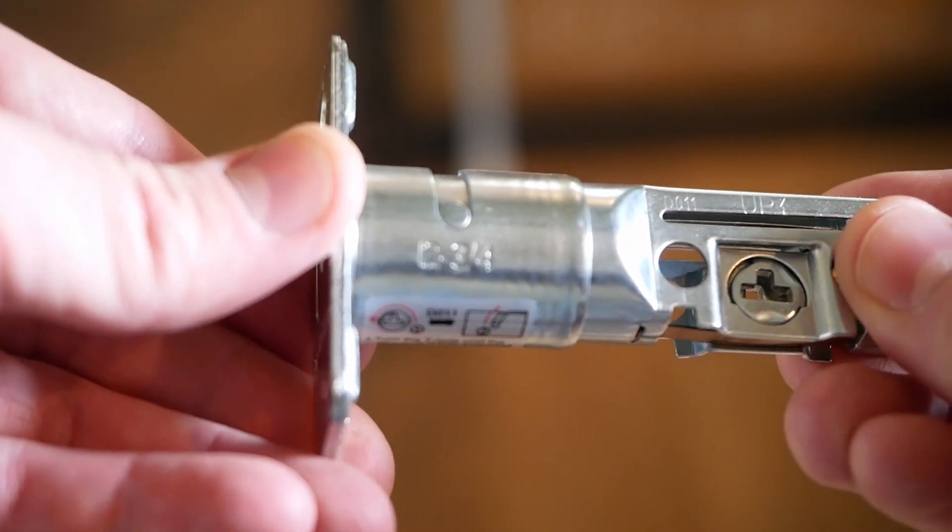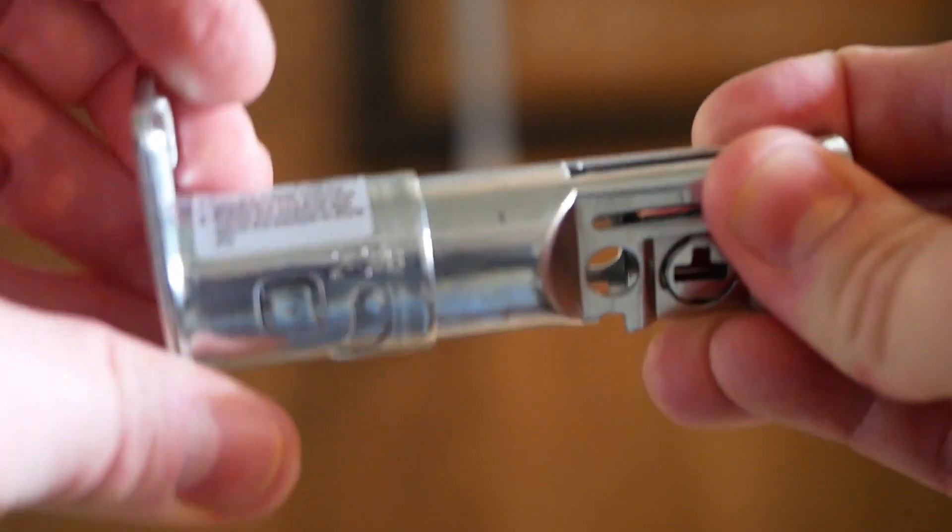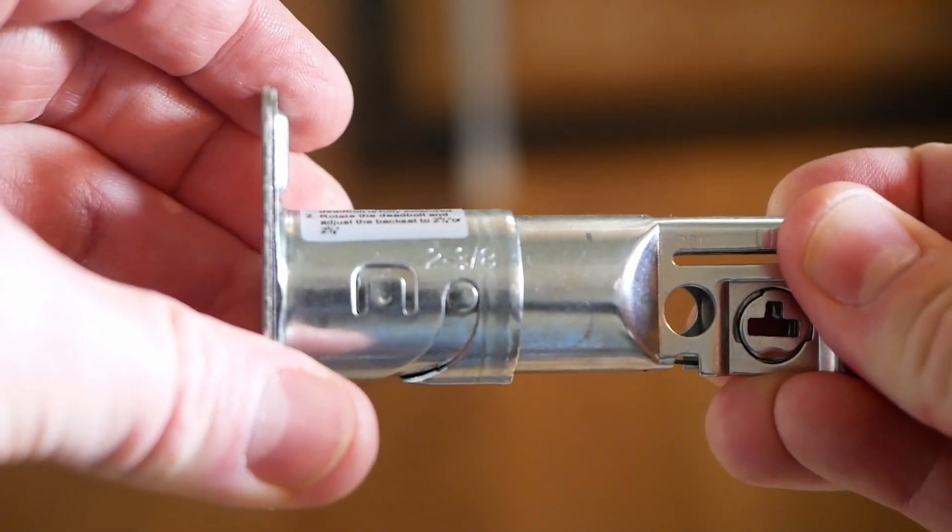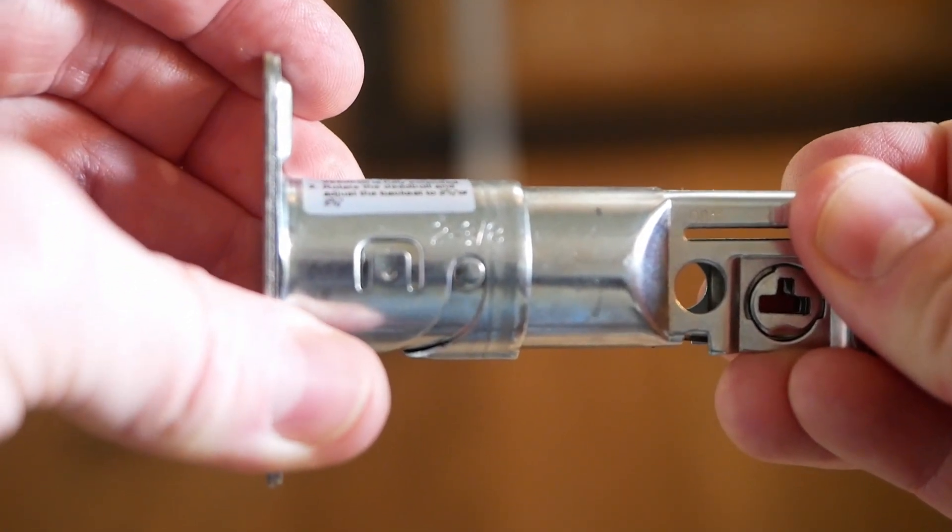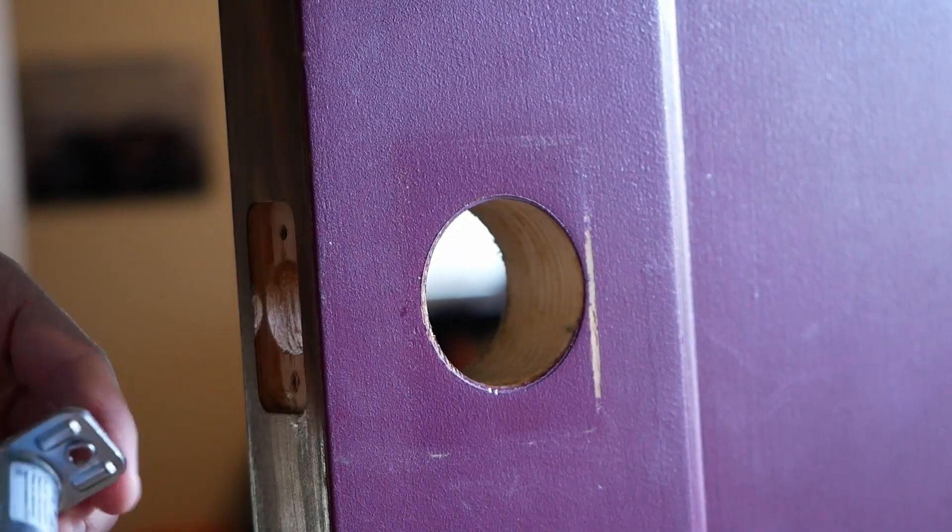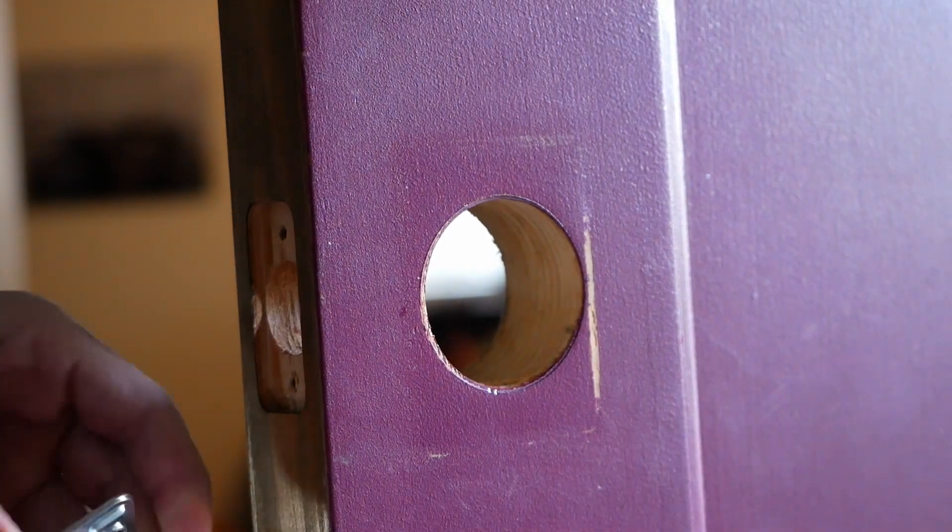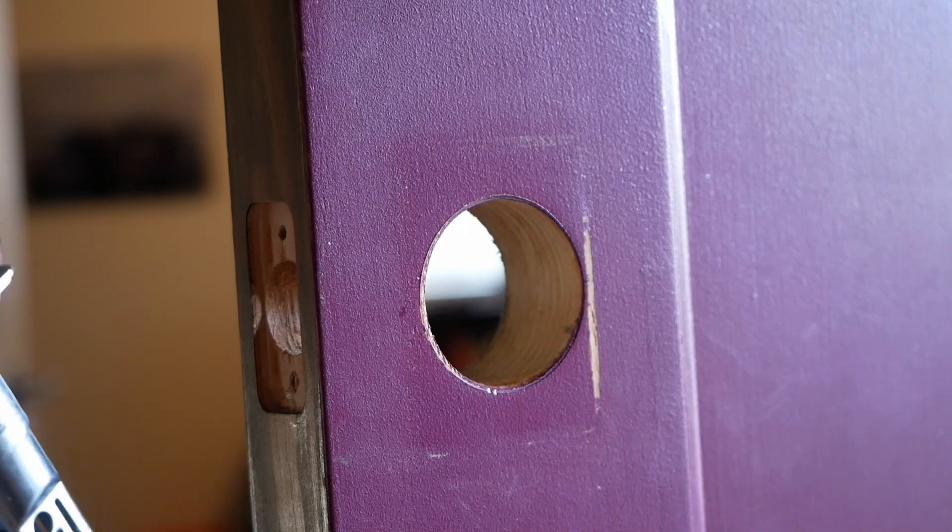See that says two and three quarters. We measured earlier and it was a two and three eighths door, so we're just going to rotate this up to that two and three eighths spot and now we're good to install. Alright, so I found a little bit of a quirk here. It's like they embossed these two numbers backwards or something, because if I set it for two and three eighths backset like we measured, it doesn't quite fit.